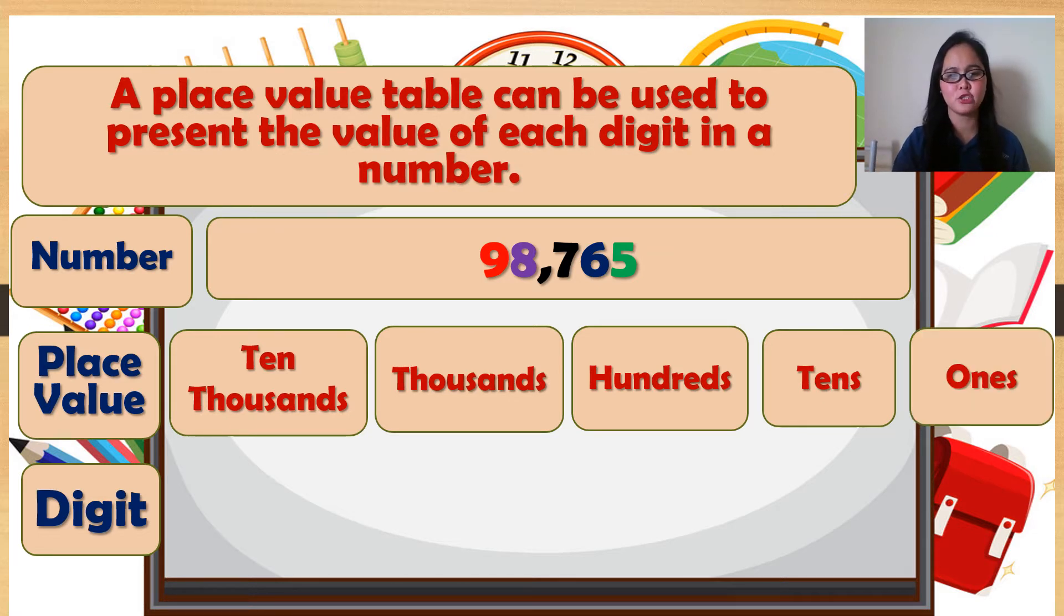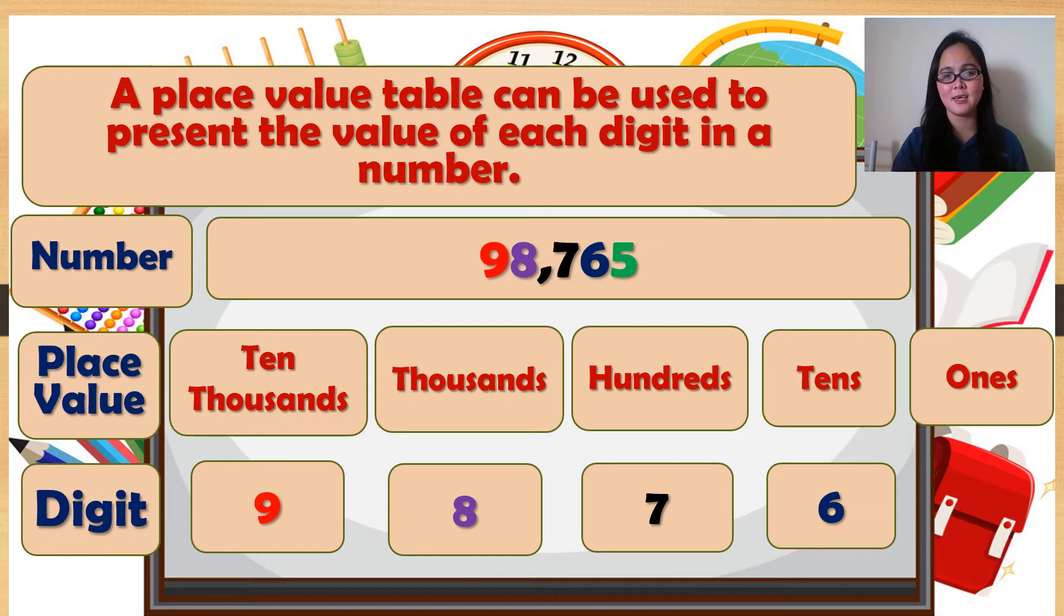For our digits, 9 is to ten thousands, 8 is to thousands, 7 is to hundreds, 6 is to tens, 5 is to ones.